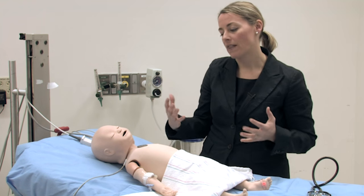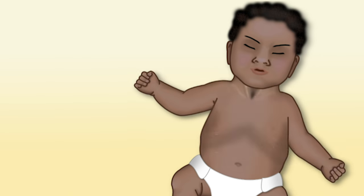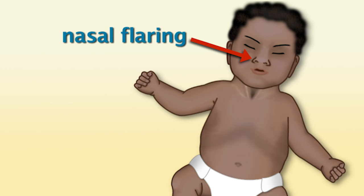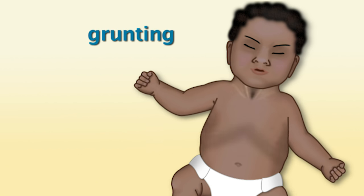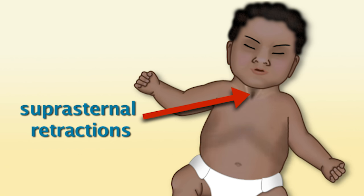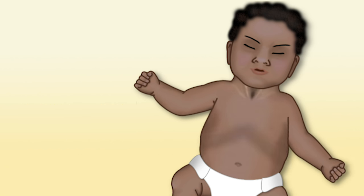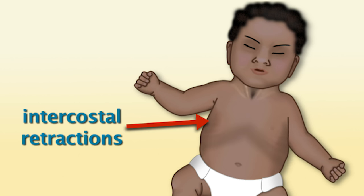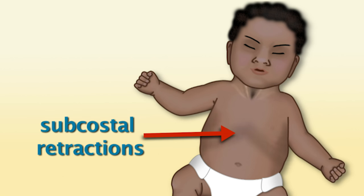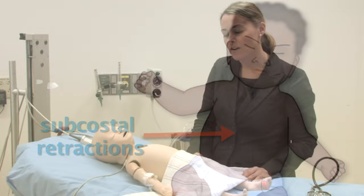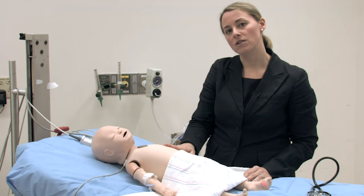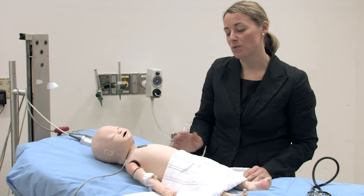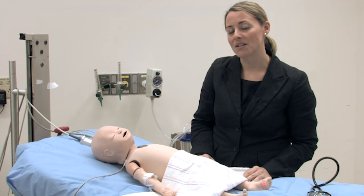I want to look at the patient's work of breathing. Signs I pay specific attention to include the presence of nasal flaring, grunting, suprasternal retractions (also called tracheal tugging), intercostal retractions, and subcostal retractions or chest caving. All of these are signs and symptoms you can use to monitor the clinical course of each patient with asthma and to help determine how sick the patient is.